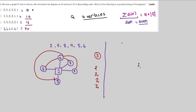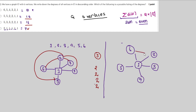Now for the third option: vertex 1 has degree 5 and connects to all other elements — 2, 3, 4, 5, and 6. There are two vertices with degree 3; say vertices 2 and 6 each have degree 3. Vertices 5 and 3 have degree 2, and vertex 4 has degree 1. In this case we are able to successfully construct the graph, so the third option is correct. Options 1, 2, and 4 are all ruled out.